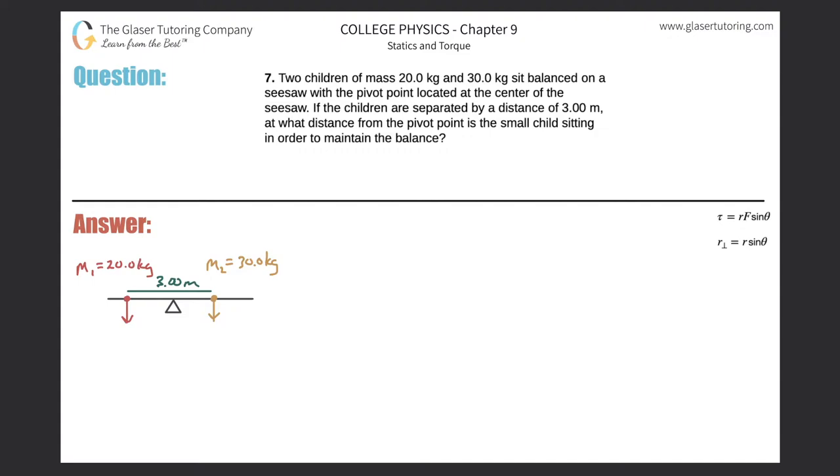Number seven: Two children of mass 20 kilograms and 30 kilograms sit balanced on a seesaw with the pivot point located at the center of the seesaw. If the children are separated by a distance of three meters, at what distance from the pivot point is the small child sitting in order to maintain the balance?